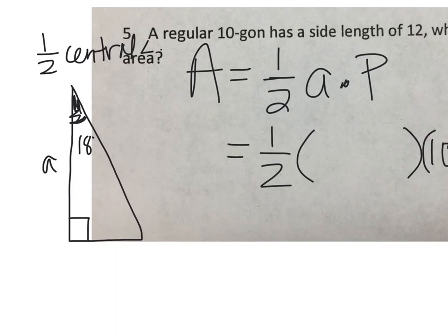Now we also know that it has a whole side length of 12, and the apothem bisects the side length, which means this has to be 6.